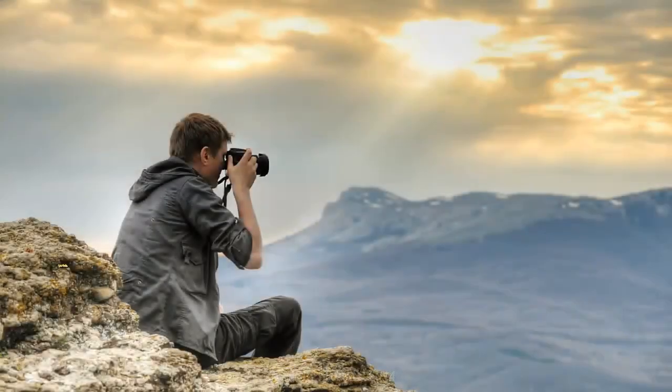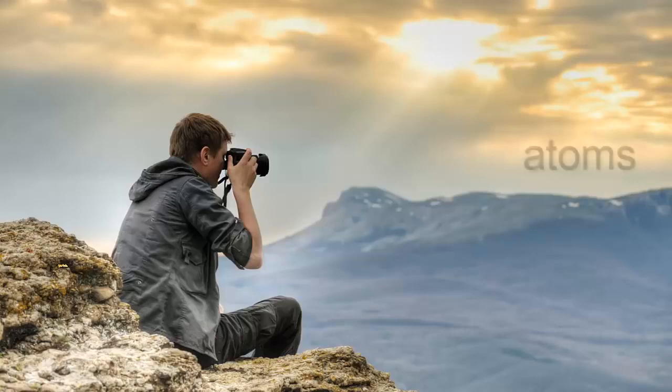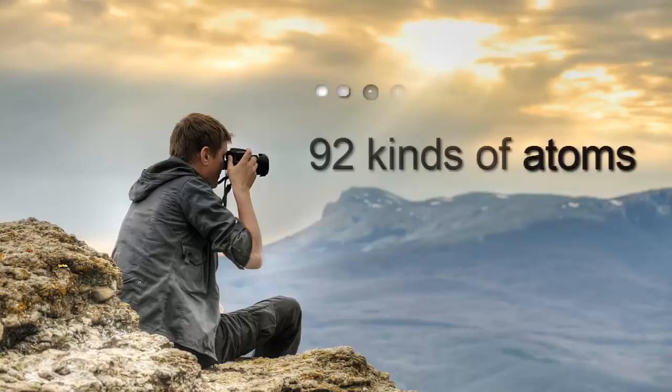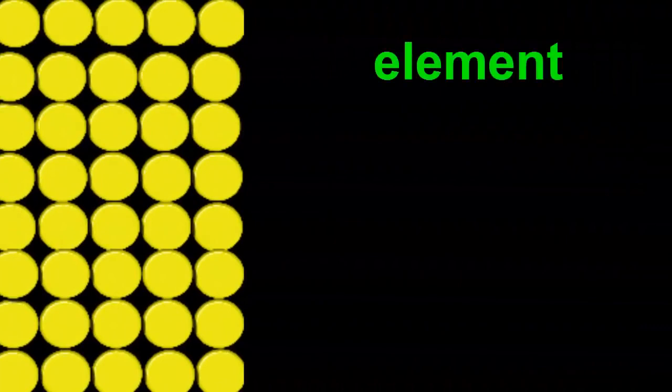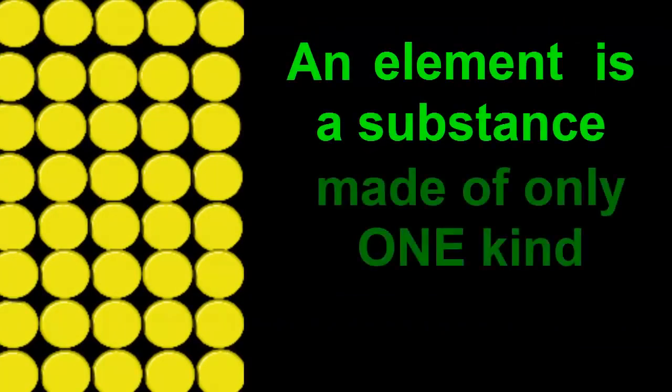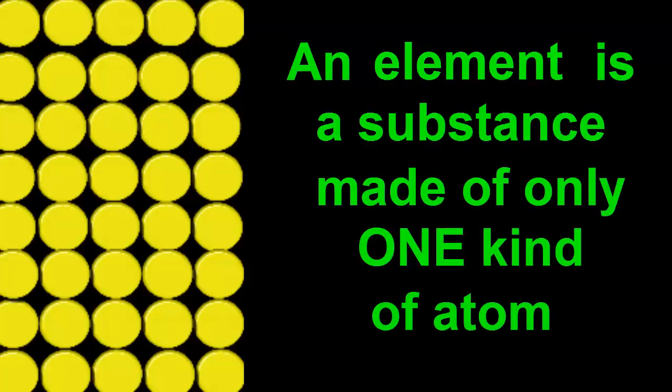In the first video we saw that all the things in the world are made of incredibly tiny particles called atoms. And also that there are 92 different kinds of them. Most things have more than one kind of atom in them, but this nugget of pure gold contains only gold atoms. So we call it an element. An element is a substance made of only one kind of atom.